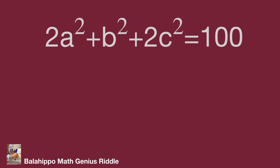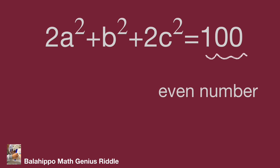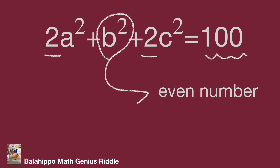Let's analyze the equation. 2a squared plus b squared plus 2c squared equals 100, and 100 is an even number. On the left side, we have 2 times a squared and 2 times c squared — these two terms are even numbers. Therefore, it leads to b squared also being an even number. Good, new information has come out.